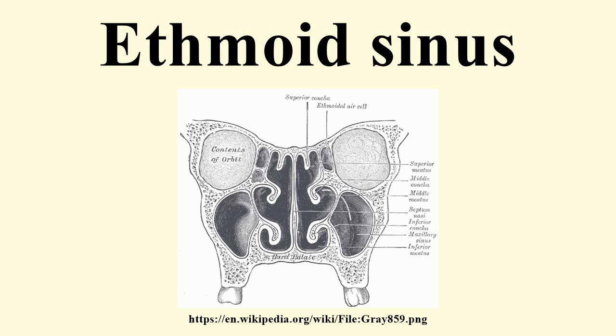Haller cells are infraorbital ethmoidal air cells lateral to the lamina papyracea. These may arise from the anterior or posterior ethmoidal sinuses.